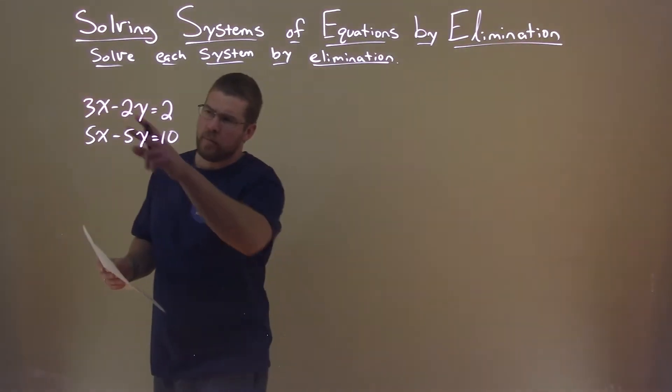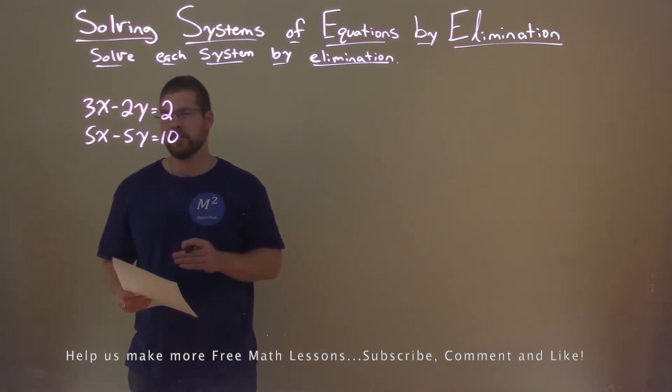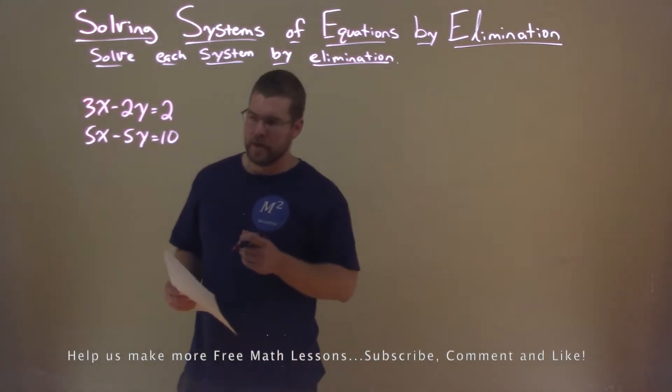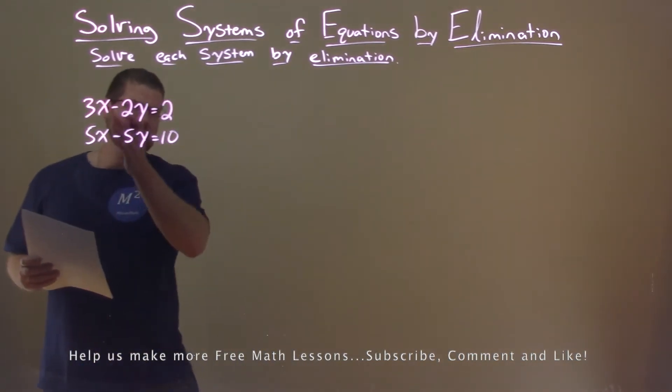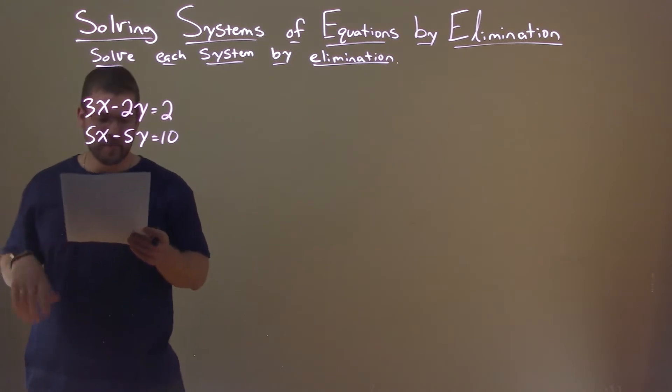We're given this problem: 3x minus 2y equals 2, and 5x minus 5y equals 10. We're solving by elimination. I cannot just add these two equations together because nothing's really going to eliminate, so I need to multiply it by a factor.